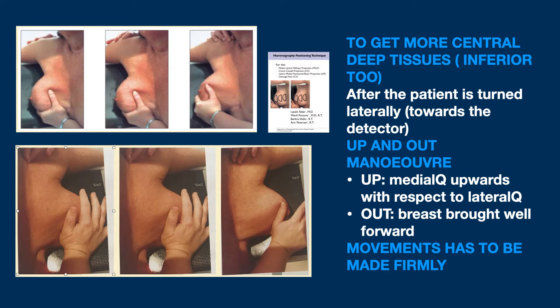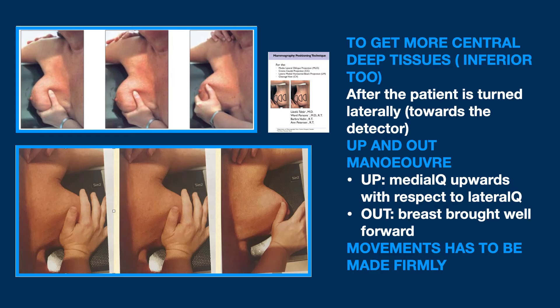This must be followed by the up-and-out maneuver, which brings the medial quadrants upwards. The medial quadrants are naturally lowered by gravity, so you rebalance them with the lateral ones — and forward — so as to stretch the breast as much as possible, thus bringing the deeper medial planes onto the detector. As small breasts are usually resistant to stretching, these movements must be made firmly.